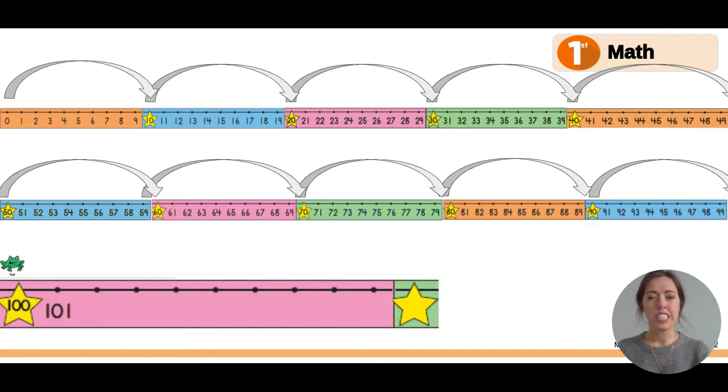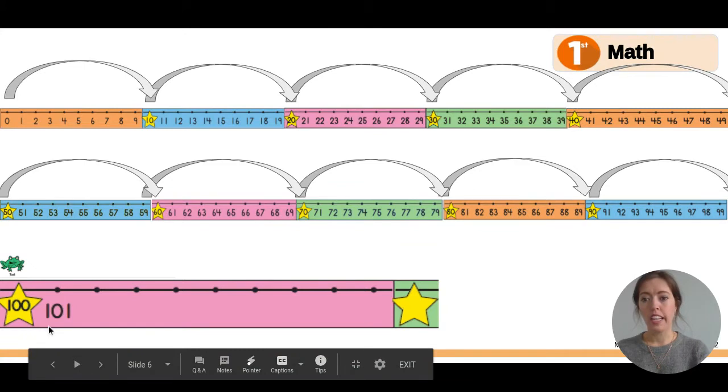Okay, there are three digits in these numbers. One, two, three. A number in the ones place, tens place, and hundreds place.